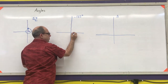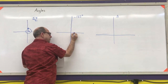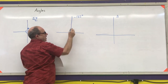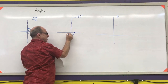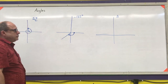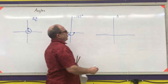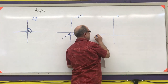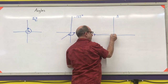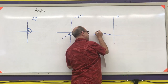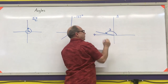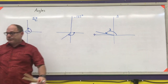For negative 135 degrees, start at the positive x-axis — that's negative 90, which means I have to go 45 more degrees clockwise, and that would be that angle. For 3 radians, remember that π radians is about 3.14, so something slightly less than 3.14 would be our 3 radians.